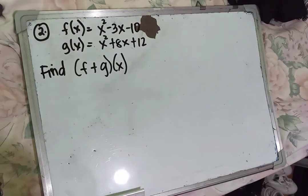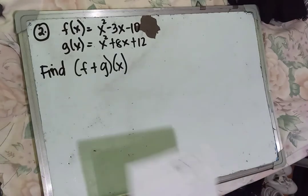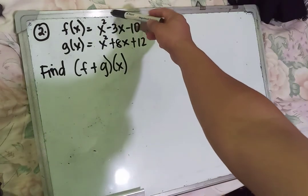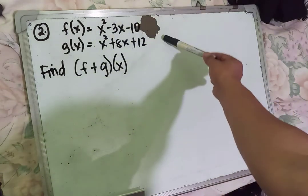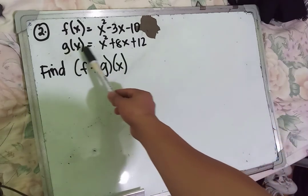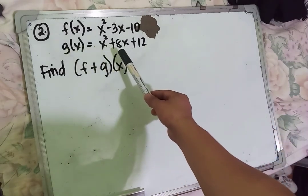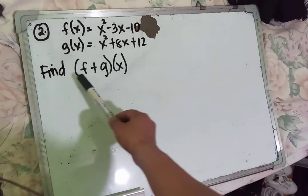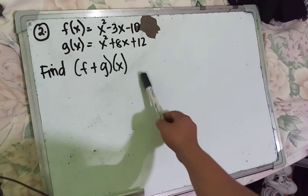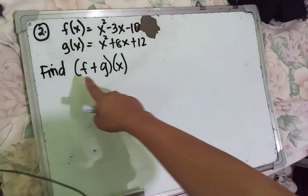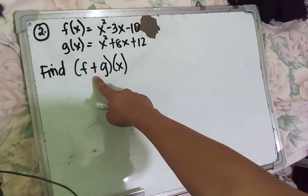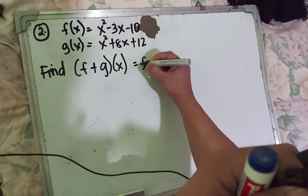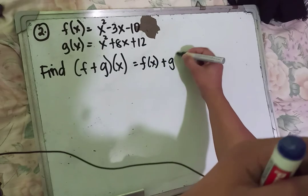That is example number 1 — the sum of the given functions. For example number 2, we have f of x equals x squared minus 3x minus 10 and g of x equals x squared plus 8x plus 12. Find the sum of the given functions using the formula: the quantity of f plus g times x equals f of x plus g of x.